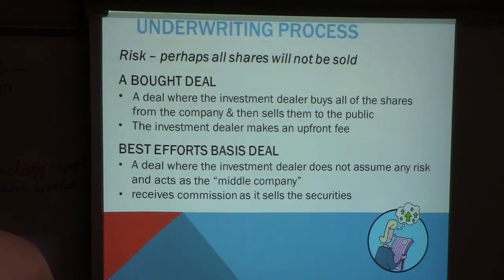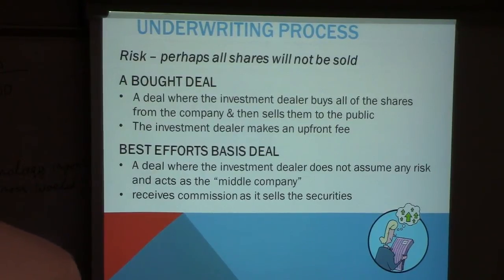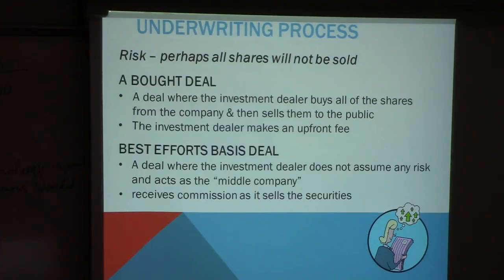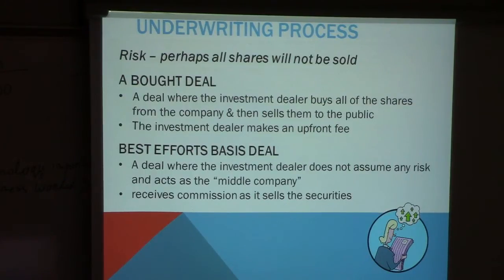On a best efforts basis, the dealer does not buy all the shares at once. Instead, they buy and sell as investors become available and take a commission — perhaps 5% or 7% — depending on the negotiation between the investment dealer and the company. The IPO is a detailed, complex, one-time process that typically takes about six months to a year to complete.